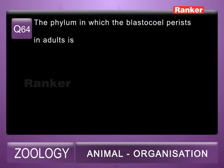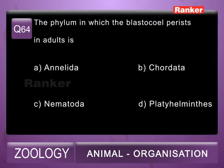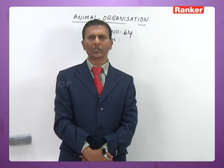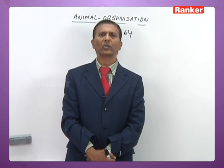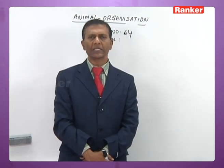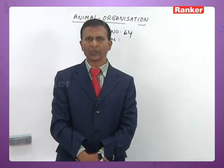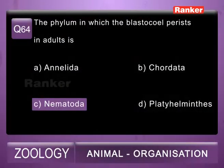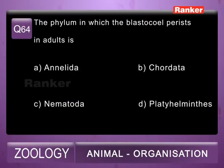Question 64: the phylum in which blastocoel persists in adults is A) Annelida, B) Chordata, C) Nematoda, D) Platyhelminthes. In pseudocoelomates the blastocoel is still persistent — that is why the pseudocoel is referred to as persistent blastocoel, leftover blastocoel, or remnant of blastocoel. Among these options, C (Nematoda) is the correct option. The 64th question correct answer is C, Nematoda.